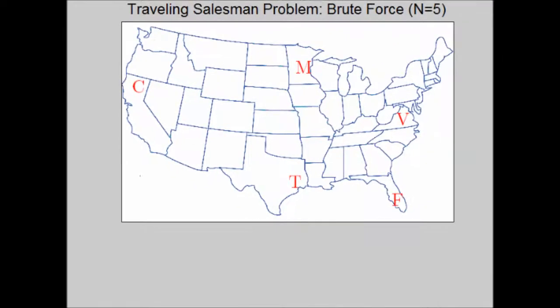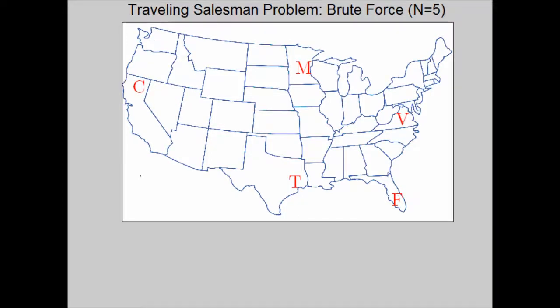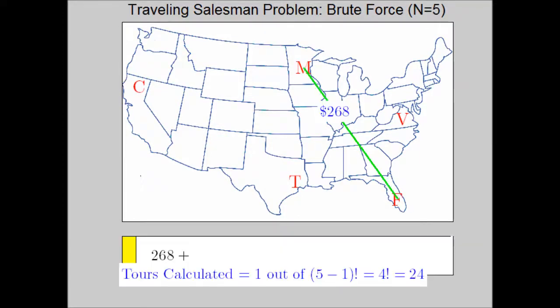We are illustrating the brute force algorithm for solving the traveling salesman problem. We'll begin with five different cities that the proverbial traveling salesman needs to fly to and then return back home.